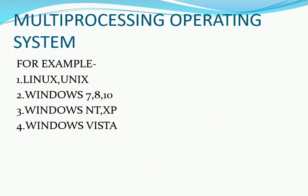Next is multi processing operating system. An operating system capable of supporting and utilizing more than one computer processor is known as a multi processing operating system. The examples for multi processing operating systems are shown on screen.